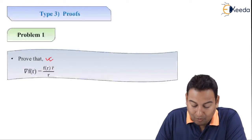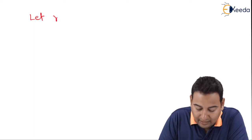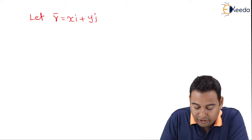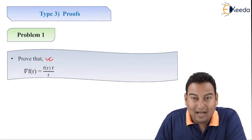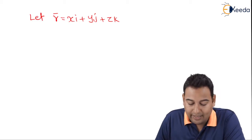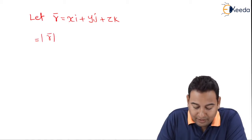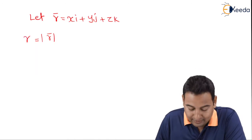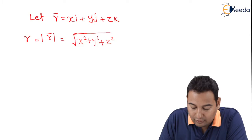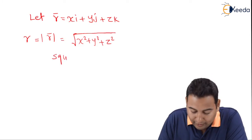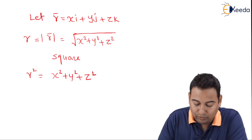In the problem, r̄ is given. Let r̄ = xi + yj + zk — all the proofs we are learning here will start with this. Taking the modulus of r̄ removes the vector and gives the scalar r, which is equal to √(x² + y² + z²). Squaring both sides, r² = x² + y² + z².